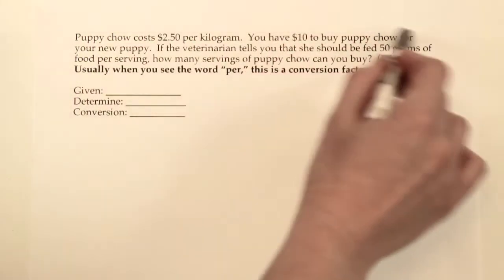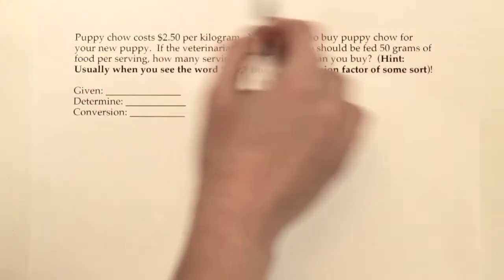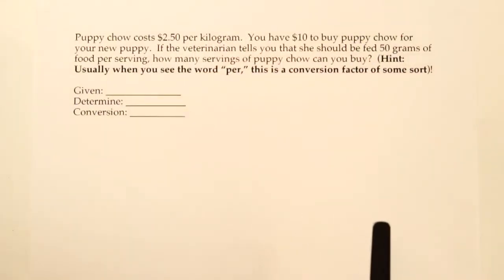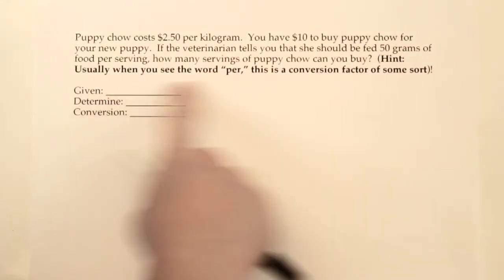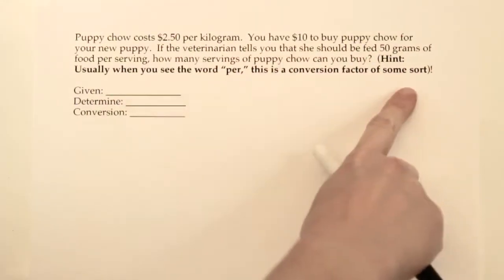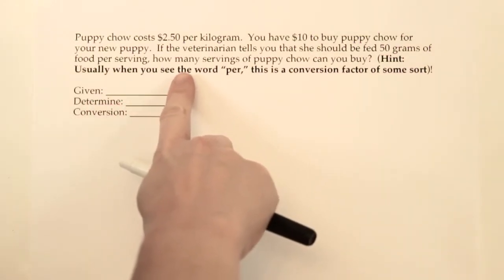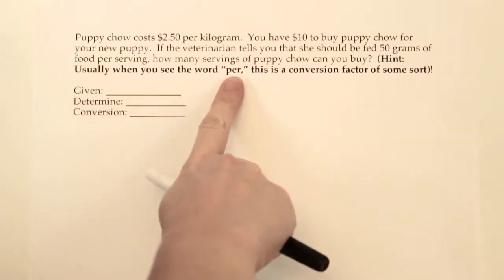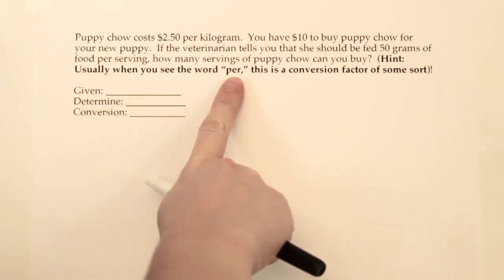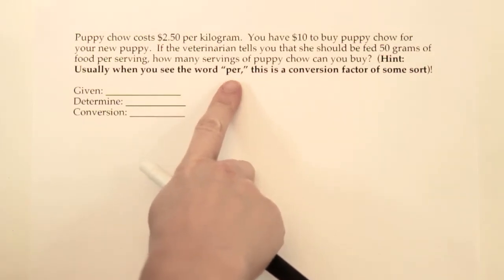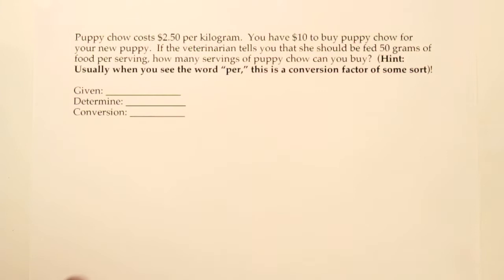We've got three numbers here and we have to decide which one of those three is the given — how do you know where to start the problem? Here's a hint that's going to help you a lot throughout the year: whenever you see the word 'per,' or if when you're reading a number out loud you would say 'per something else,' that's going to be a conversion factor, not a given.